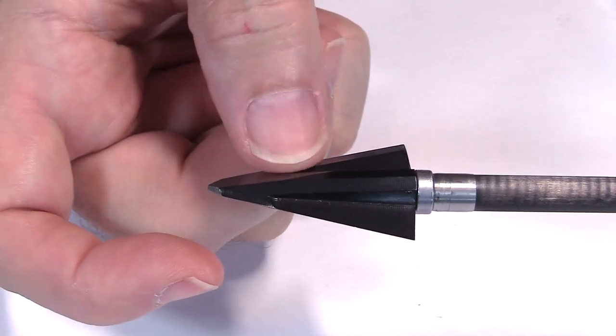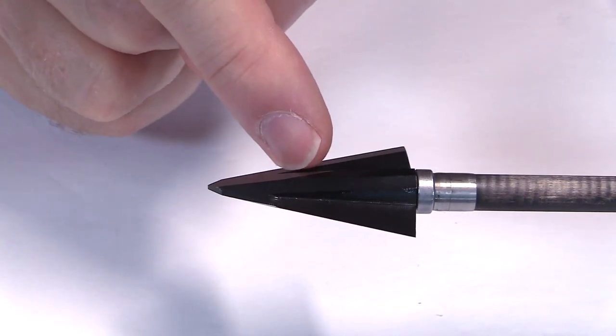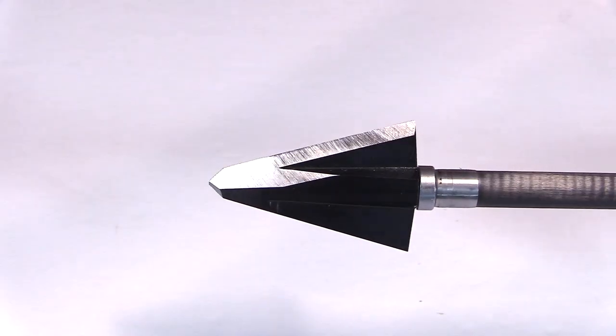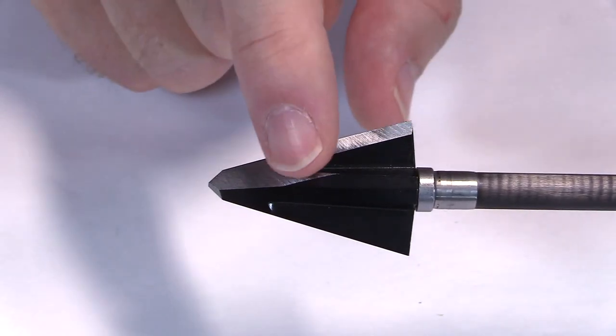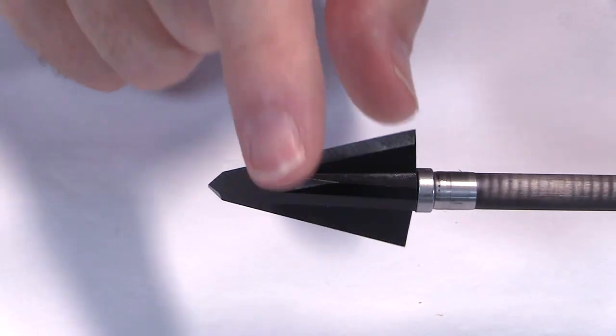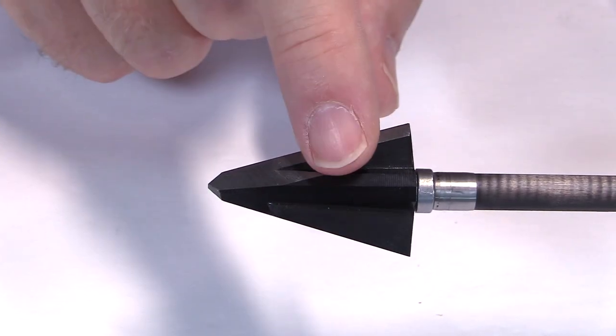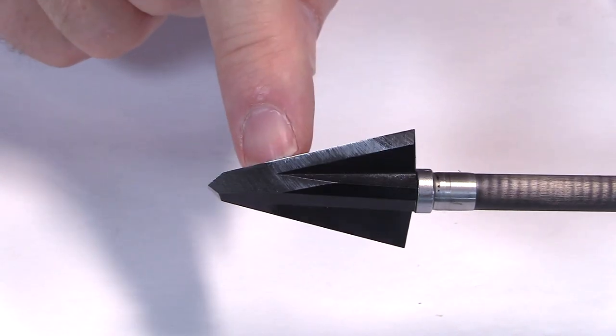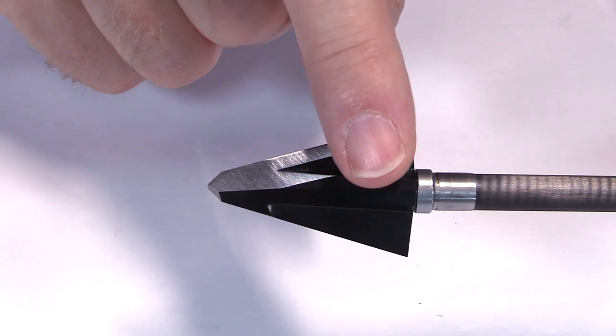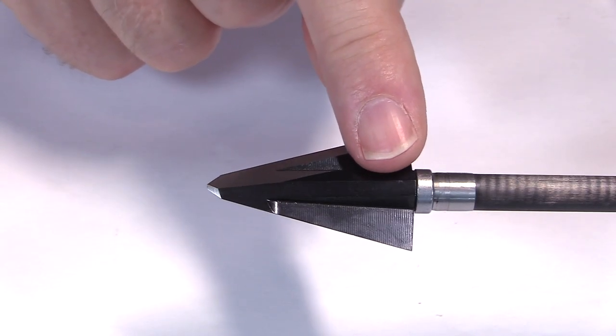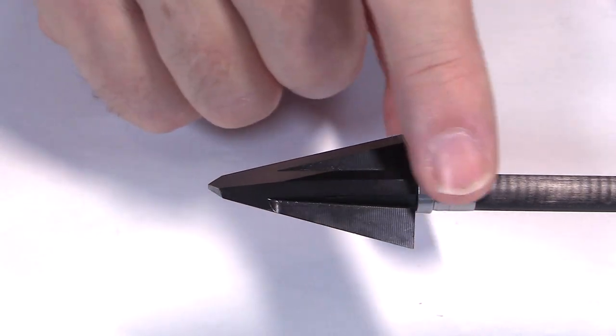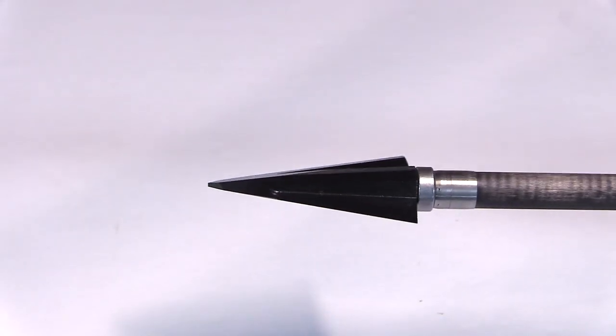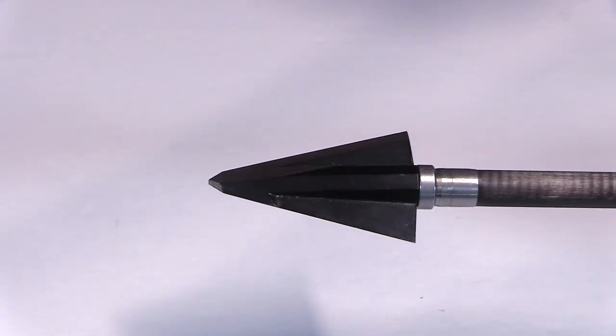Then it switches over to a single bevel. And the last two thirds are single bevel. And you can see that single bevel there when you get the light on. You can see the single bevel. It switches over right at that point. And then that's a 26 degree bevel. And that's going to cause some rotation. So it penetrates the bone like that. And then as it presses in, it rotates and it pries the bone apart, allowing the arrow and the rest of the broadhead to glide right through into the animal. So that's the theory behind it.